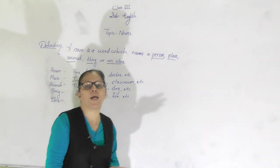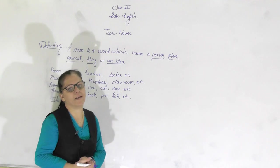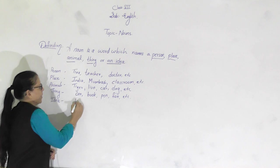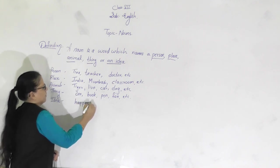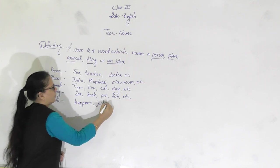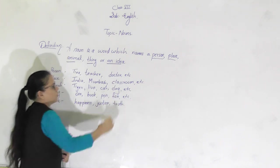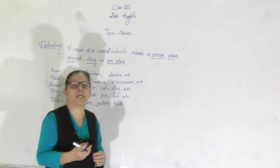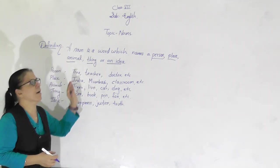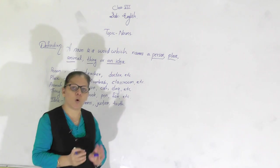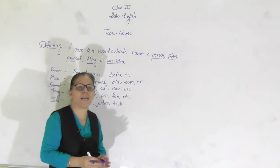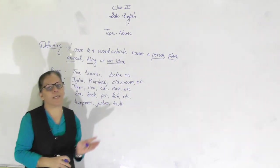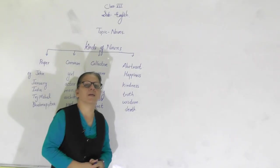The name given to an idea is also called a noun — ideas like happiness, justice, truth. These are things we cannot see or touch; we can only feel them. So the names given to these things are also called nouns. To summarize: a noun is a name given to any person, place, animal, thing, or idea.